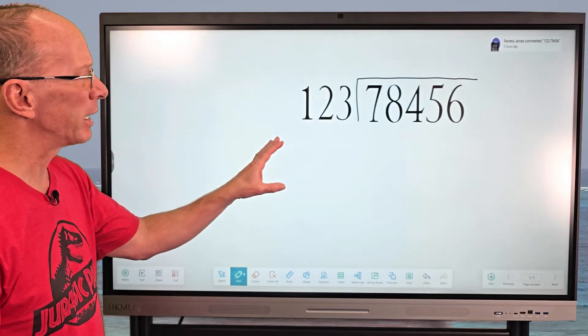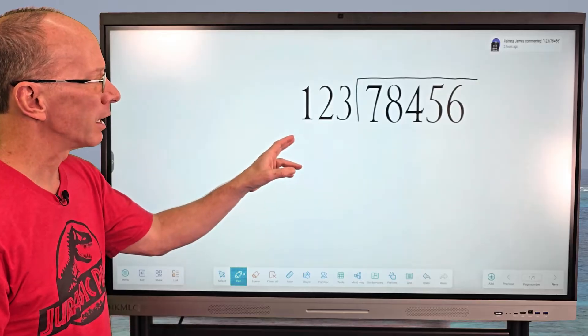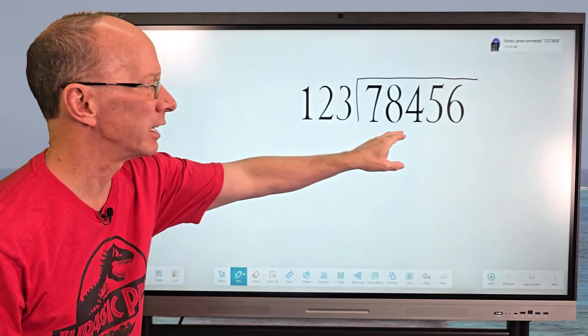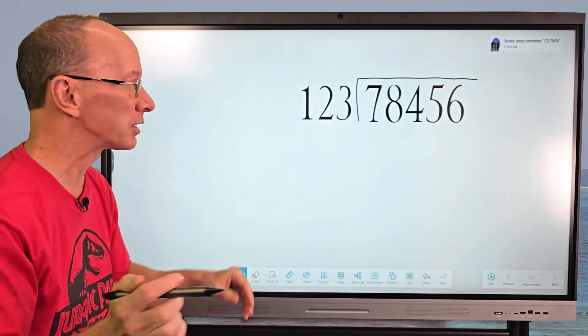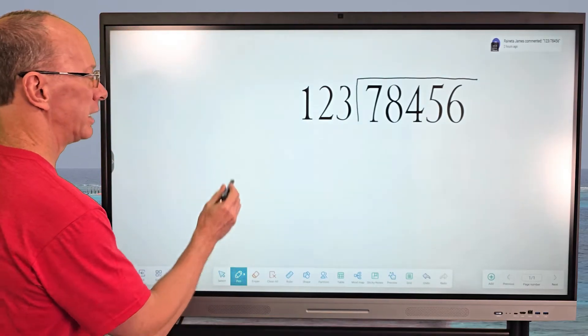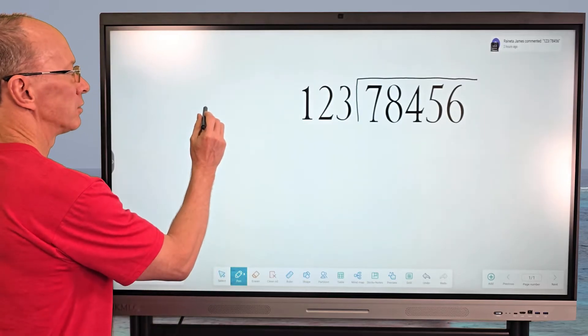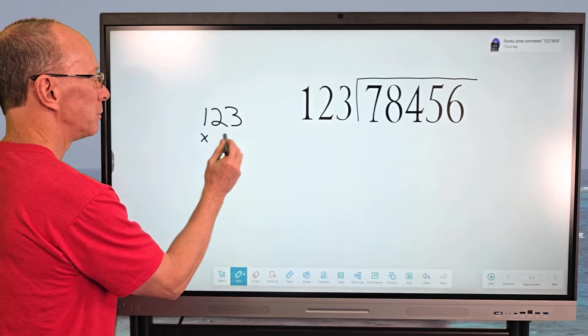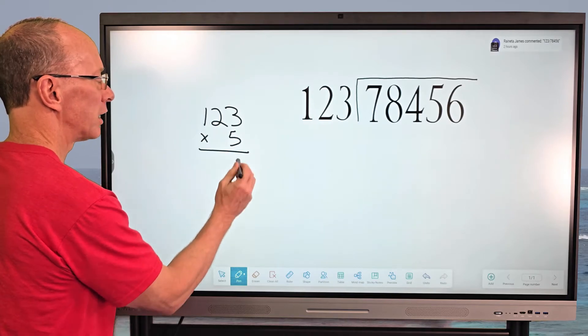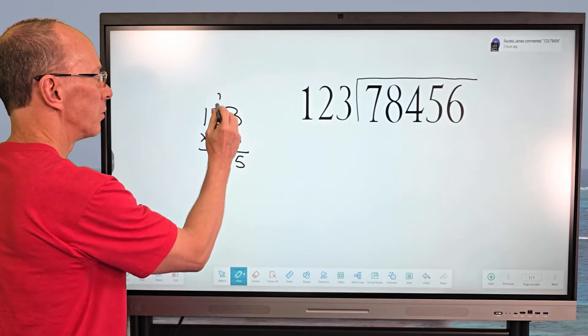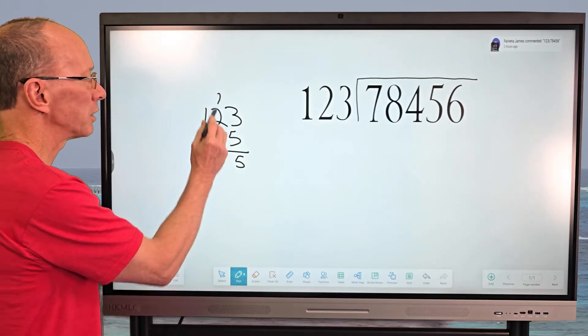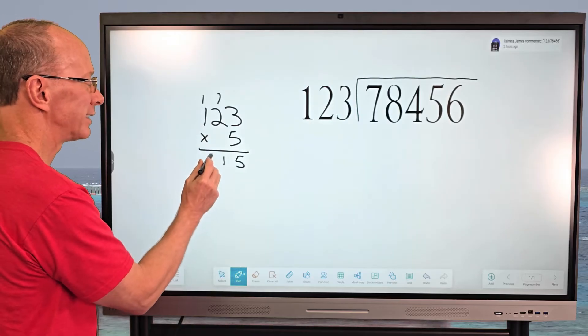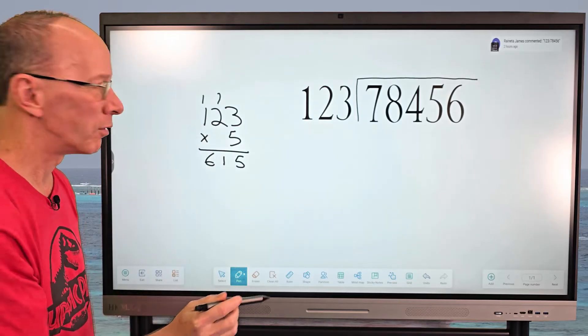And just by doing a little mental math, I'm thinking maybe I could probably fit 123 into 784, maybe five, six or seven times. Let's go ahead and try five right now. So I'm going to go ahead and do a little figuring off to the side. 123 times five. So five times three would be 15. Carry the one and five times two is 10. Plus the one is 11. Carry the one and then five times one is five. And then plus the one is six. I can definitely go more.